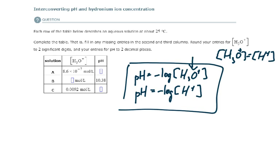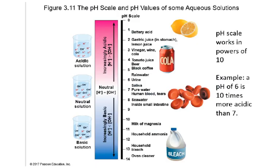That doesn't mean all pH values are positive. At very high concentrations of hydronium ions, pH can actually be negative. When you see the pH scale, it's normally presented as running from 0 to 14, but you can also have pH values below 0 and above 14. It just depends on how concentrated the solution is with respect to H+ or hydroxide ions.